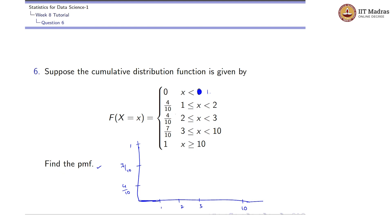At x = 1 you will have the value 4/10 — there is a jump there. Until x = 2 we will have 4/10, and from 2 to 3 also the value of 4/10. At x = 3 you will have a cumulative probability of 7/10. Until x = 10 the value would be 7/10, and once it is equal to 10 or greater, it is equal to 1. This is the cumulative distribution function plot.